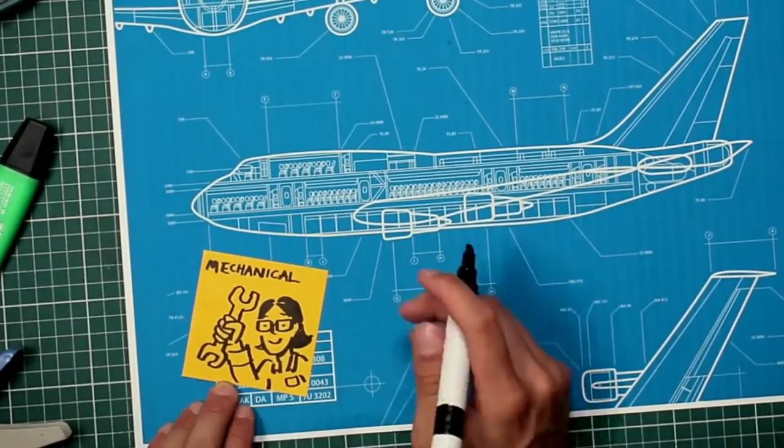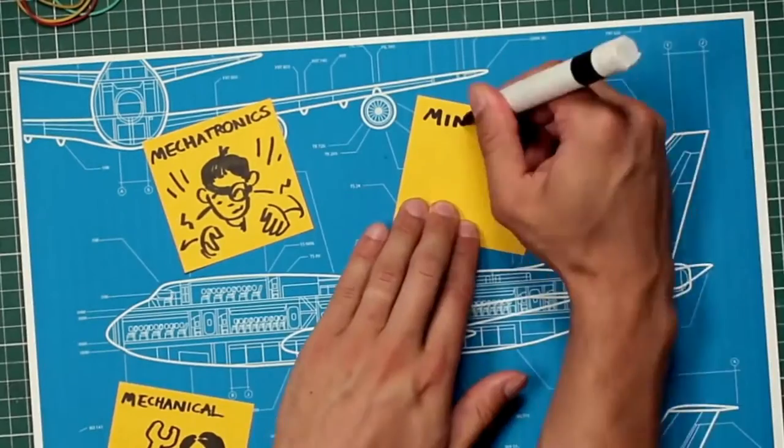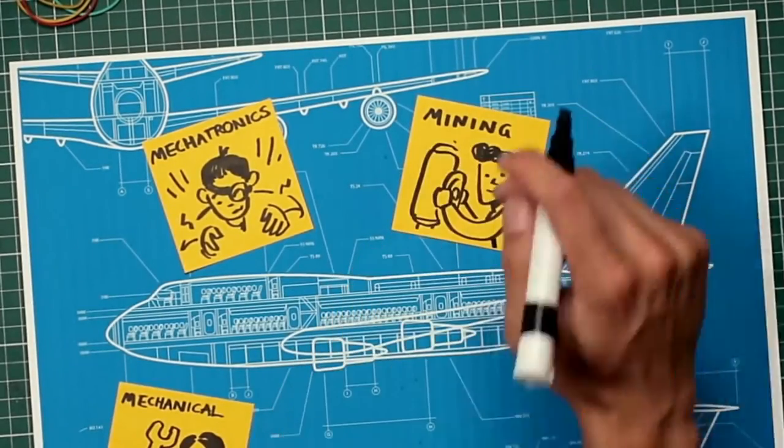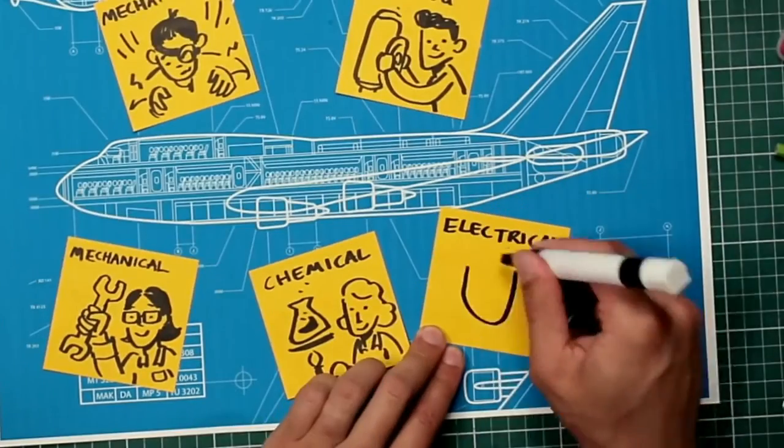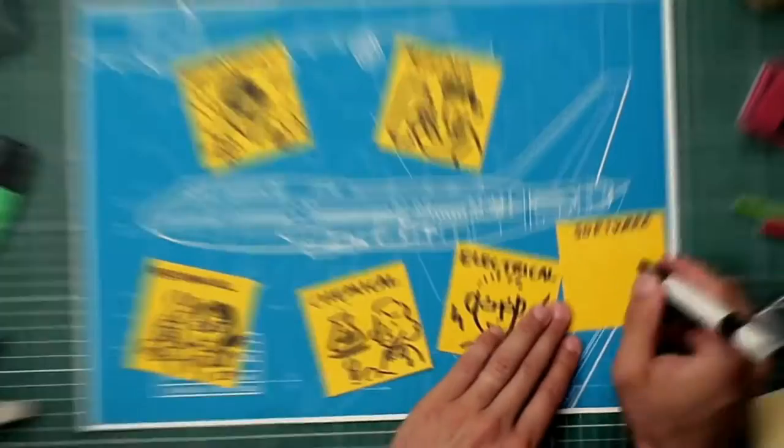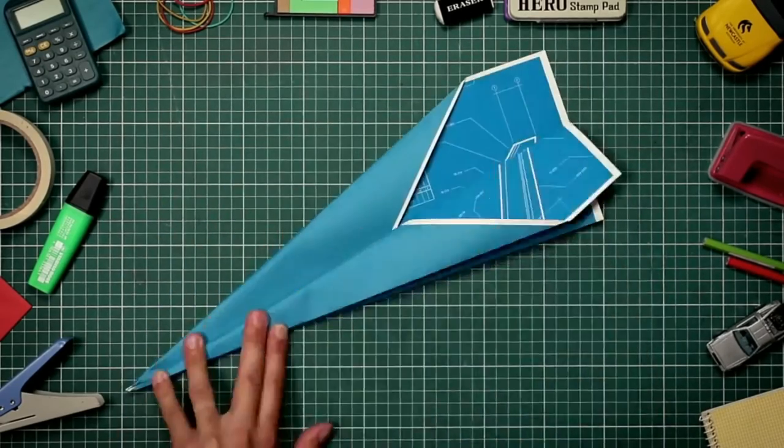A mechanical engineer designed the engine. A mechatronics engineer devised the controls. The fuel? Extracted by mining engineers and refined by chemical engineers. The navigation systems? Electrical and software engineers created those. Yep, a whole team of engineers.